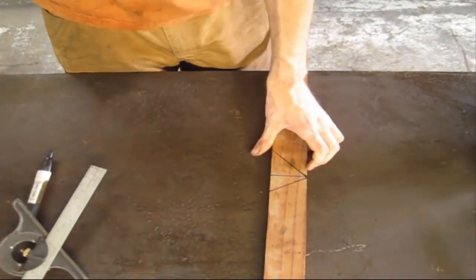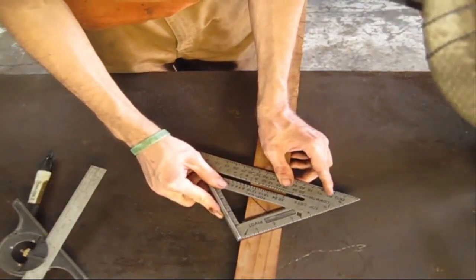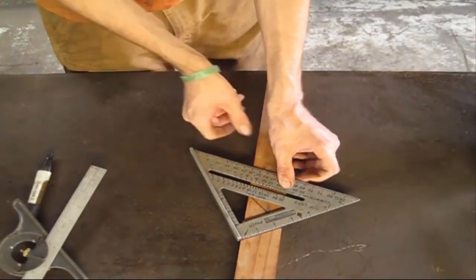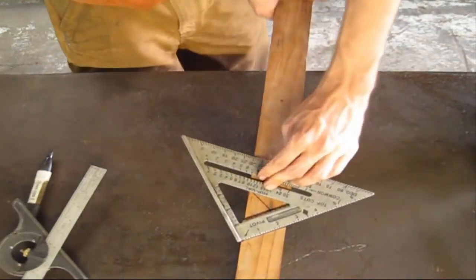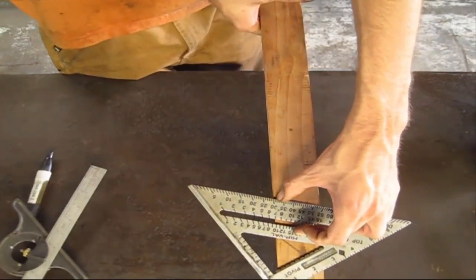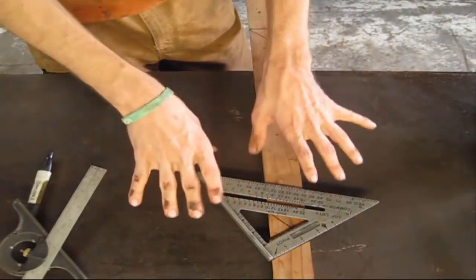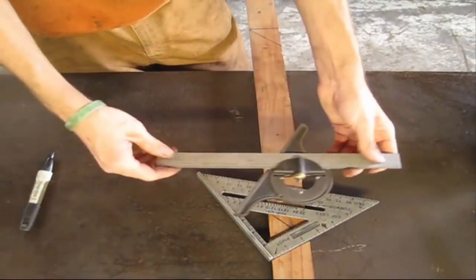Now we can check that with the speed square. We'll place our speed square down and use our pivot. The speed square says that's 30 degrees. So what gives? Why is it showing that? This is where the speed square and the combination square differ a little bit.